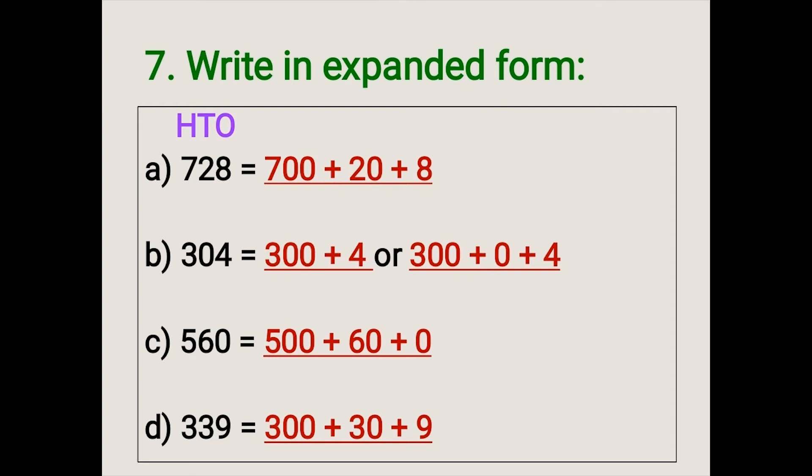So the answer is 700 plus 20 plus 8. B: 304. The answer is 300 plus 4, or we can write it as 300 plus 0 plus 4.